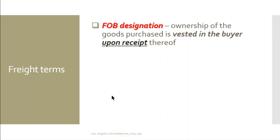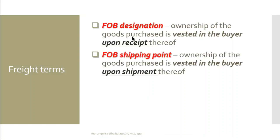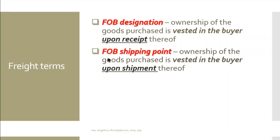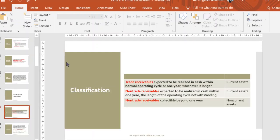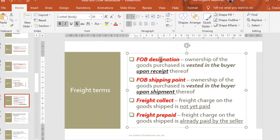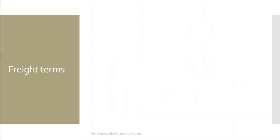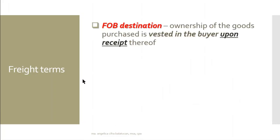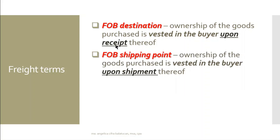Let's have a review of the common freight terms. We have FOB destination and FOB shipping point. These terms were already discussed in the fundamentals of accounting, but this is a review. These terms will determine who are the owners of the goods that are shipped in transit.